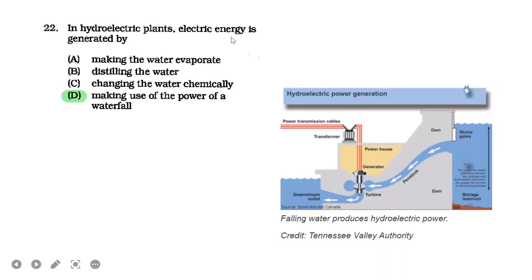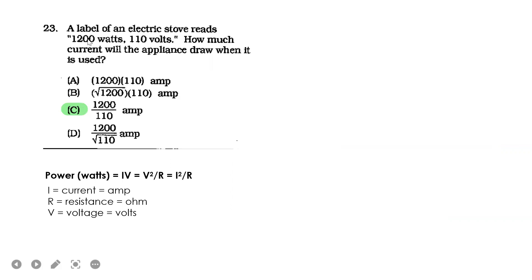Next. In hydroelectric plants, electric energy is generated by making use of the power of a waterfall. This is how hydroelectric power generation works. The power you get is the electricity energy generated when the water falls and the force of the water passes through the turbine.